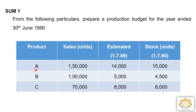Product A: sales in units 1,50,000; estimated opening stock 14,000; closing stock 15,000. Product B: sales in units 1,00,000; opening stock 5,000; closing stock 4,500. Product C: 70,000 units; estimated opening stock 8,000; closing stock 8,000.